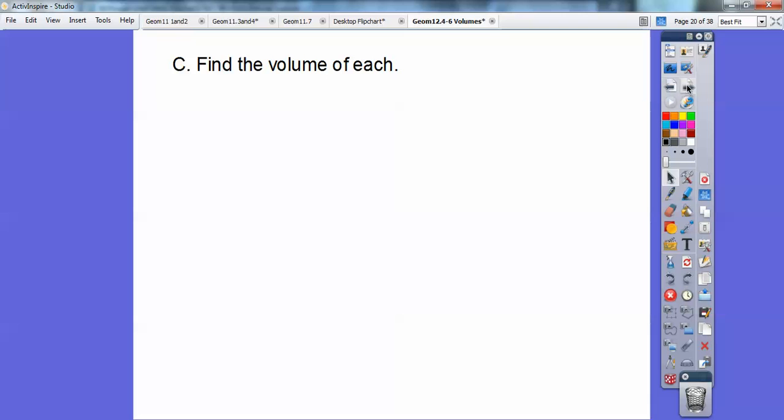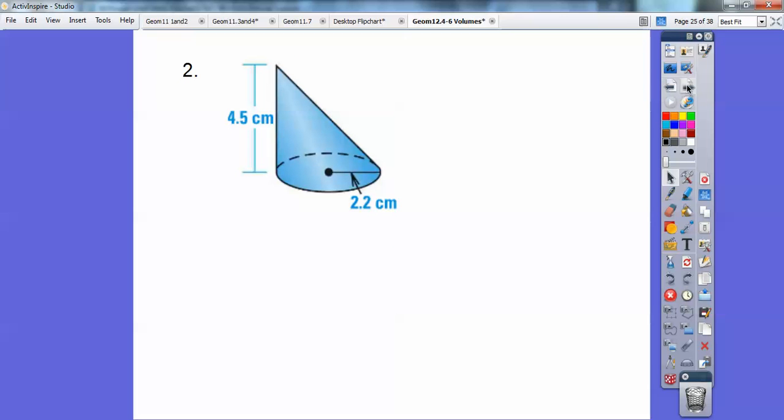Okay, find the volume of each. So these are just the rest. This is a cone. Remember, cones is one-third the area of the base, which is πr²h. So it's going to be one-third π times 10 squared times the height, which is 13, and 10 squared is 100. You've got to do that first, and then times 13, and nothing cancels. So I get 1,300π all over 3, and this is in millimeters cubed. Volume is always cubed.